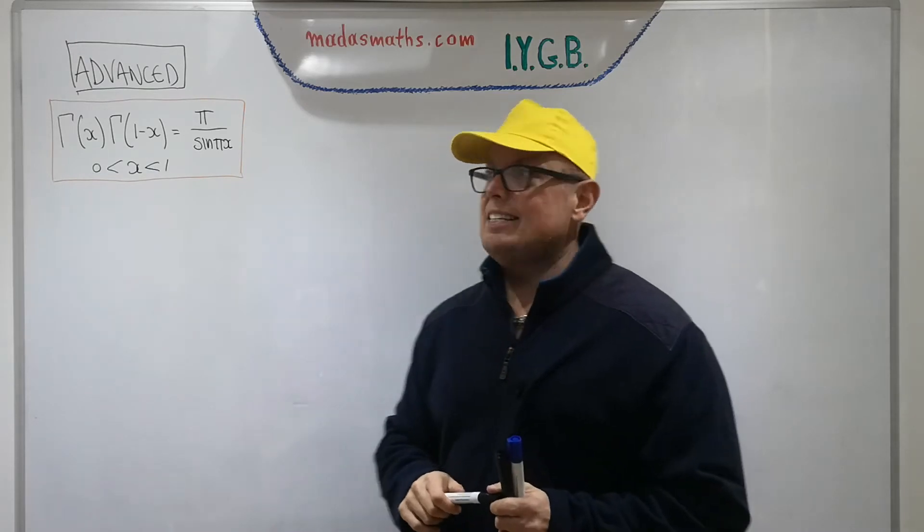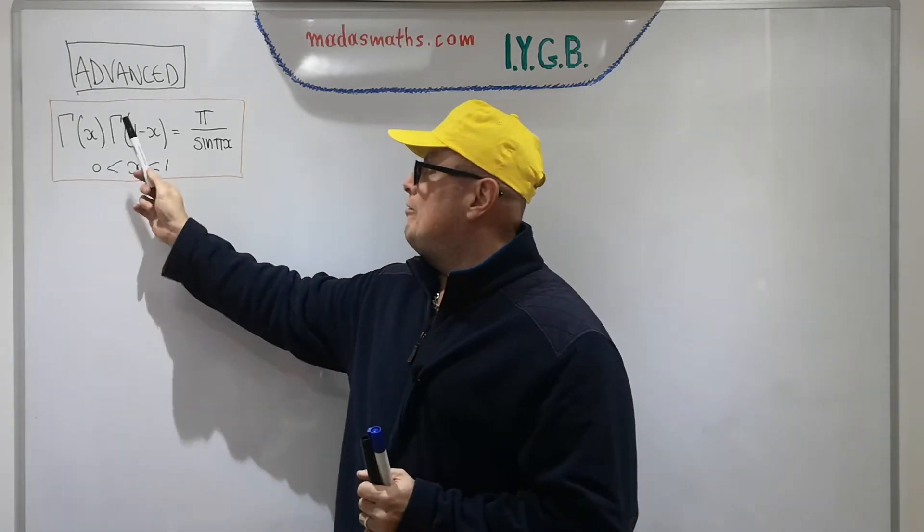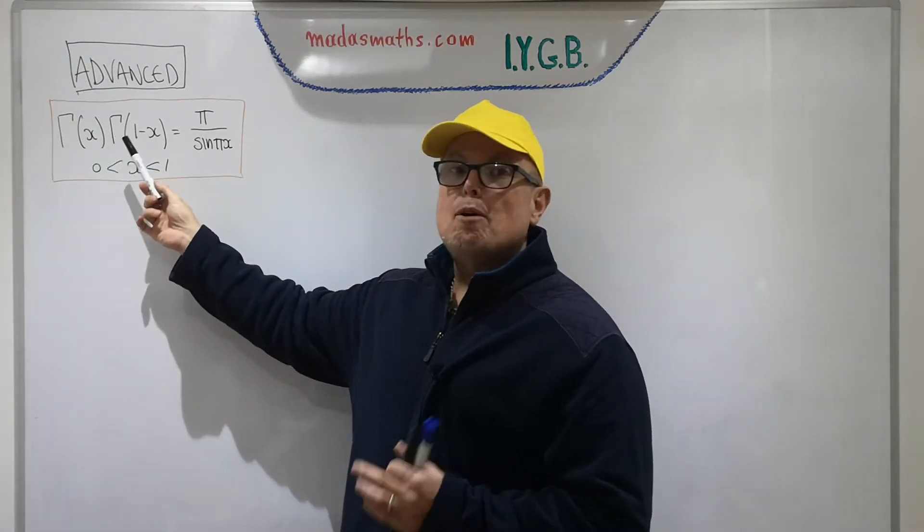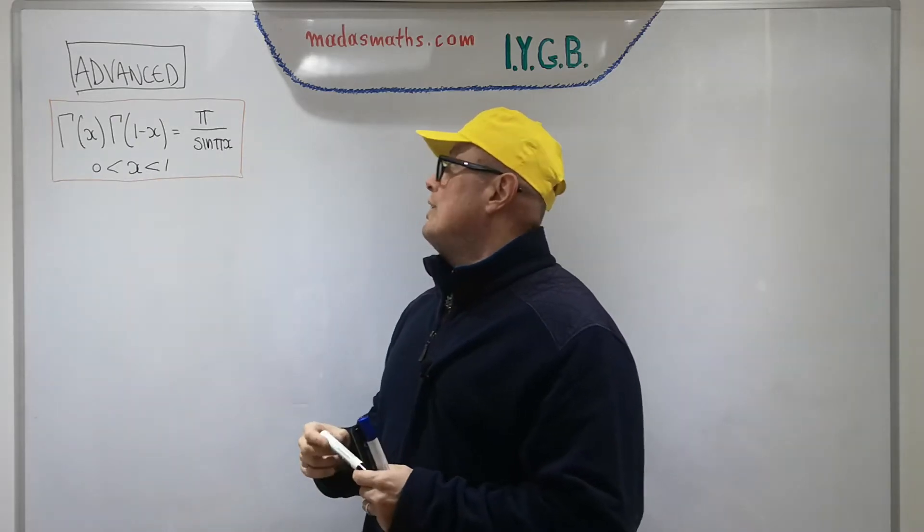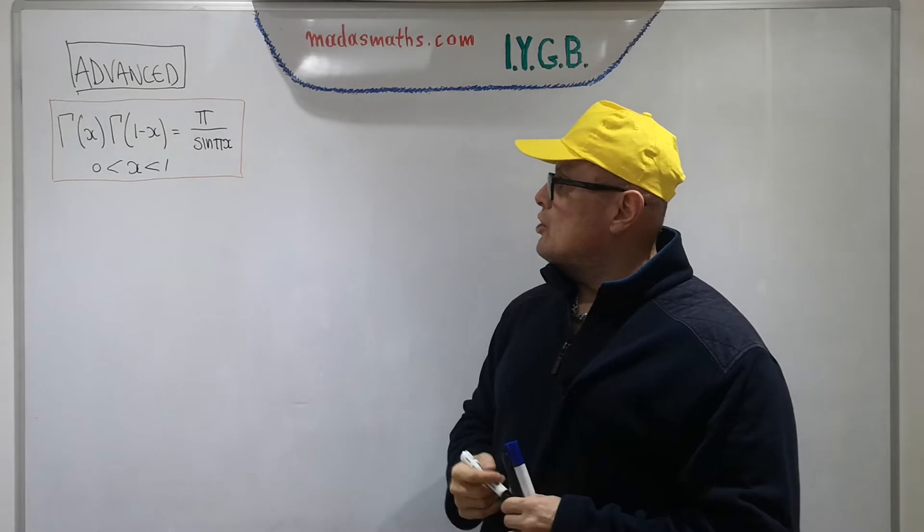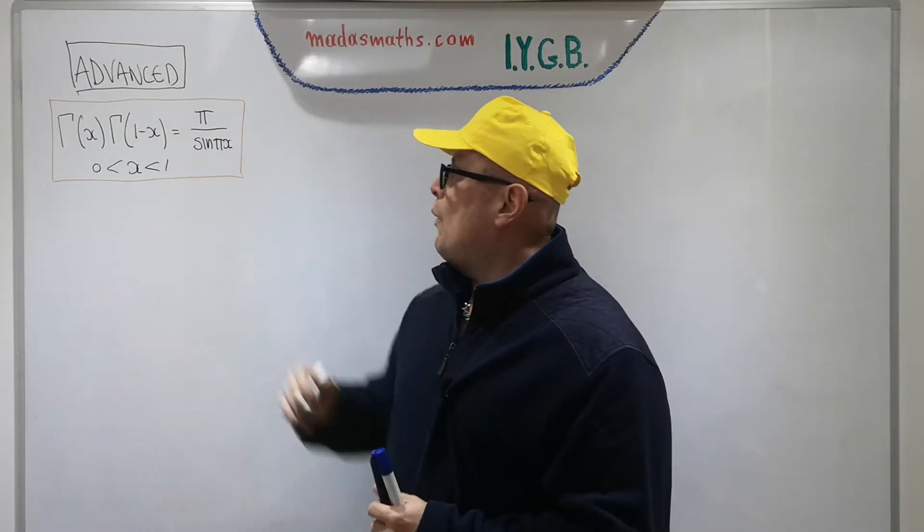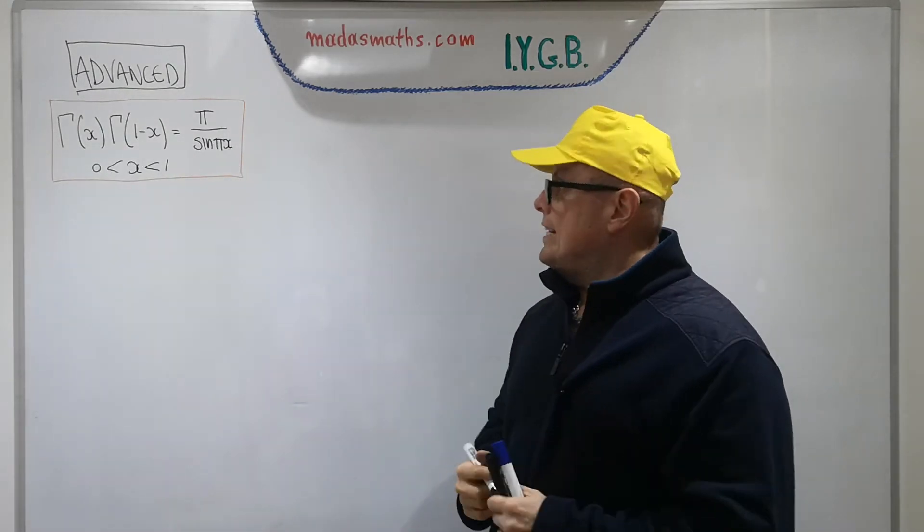I mentioned this particular formula for the gamma function: gamma of x times gamma of 1 minus x equals pi over sine pi x, so long as your x is between 0 and 1, and we're going to look at the real case here.